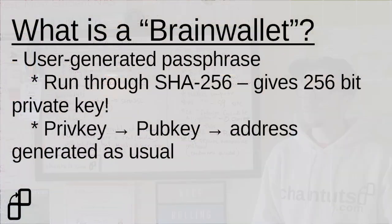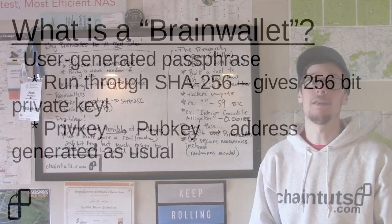So what is a brain wallet? Remember that a private key is simply a 256-bit number. It turns out if you run any data through the SHA-256 hashing algorithm, you get a 256-bit number. SHA is a special hashing algorithm — a one-way function that is also deterministic. So anytime you put data through this hashing algorithm, you can't go back to that original data from the output, and anytime you put the same input into the hash algorithm, you always get the same number back out.